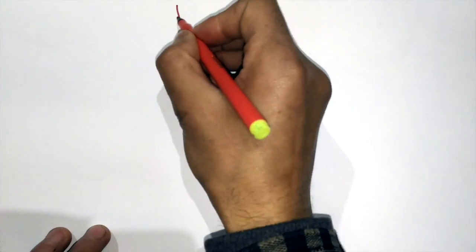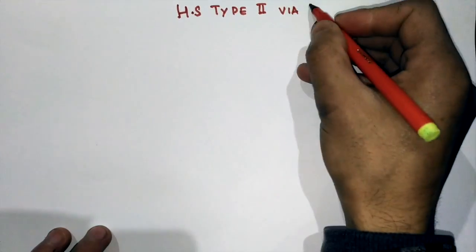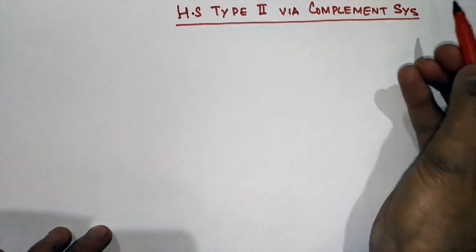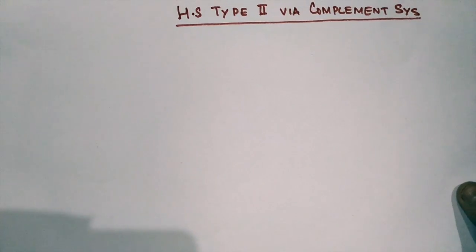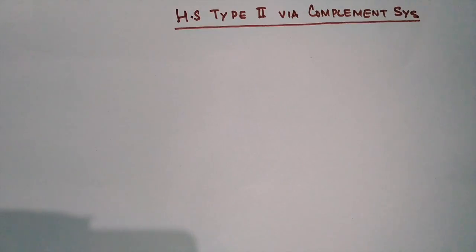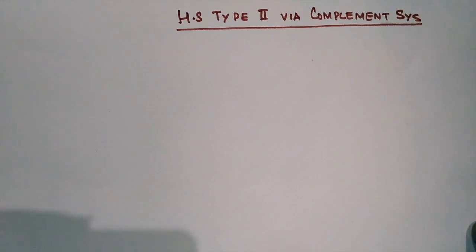Now let's discuss hypersensitivity type 2 via the complement system — the membrane attack complex. The complement system has more than 30 proteins in our immune system that aid in damaging or eliminating pathogens or any foreign particles from the body.